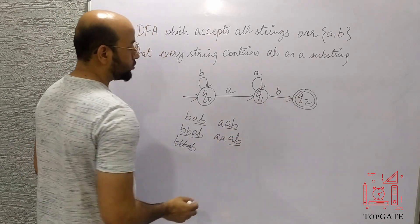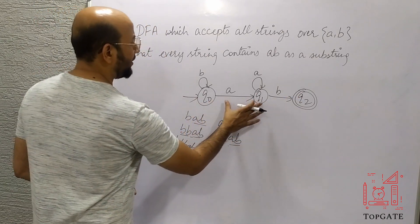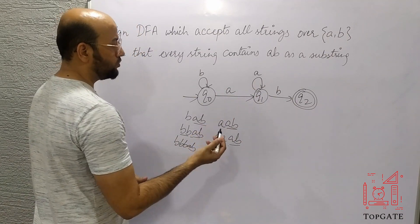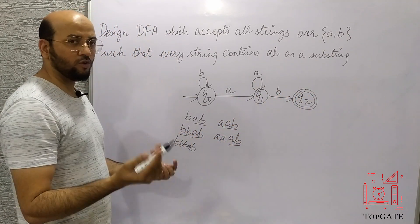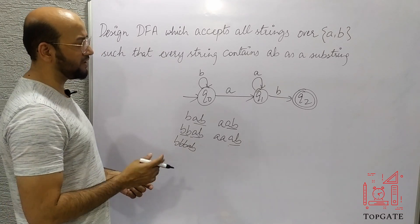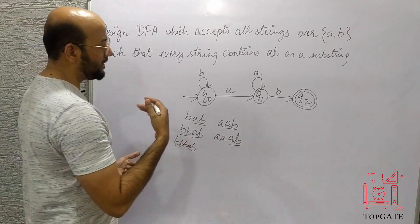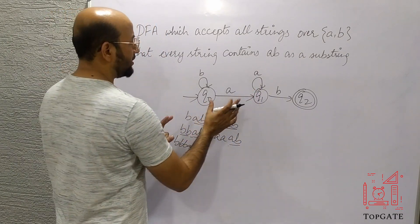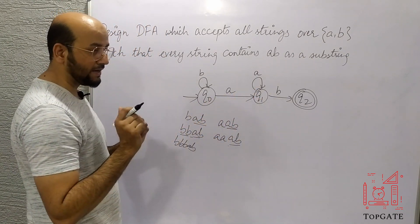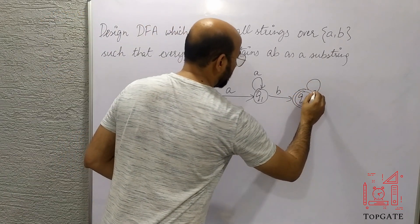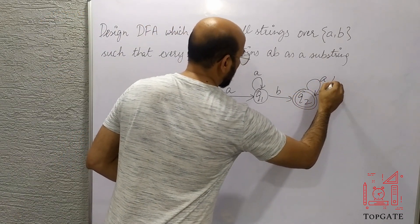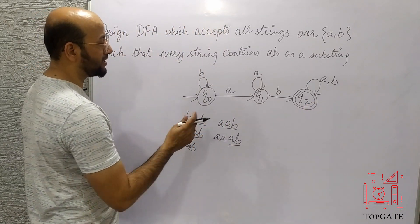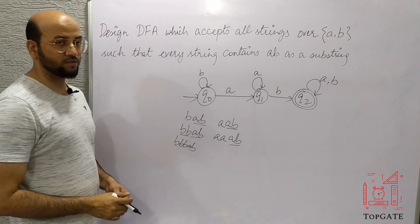Now at q2, since we have already found our substring AB, there is no further issue. We can have any character — either 'a' or 'b', multiple a's or multiple b's. The first requirement — that the string contains at least AB — is already satisfied. So at q2 I'll take a self-loop for 'a, b'. With this DFA, I can accept any string which contains AB as a substring.